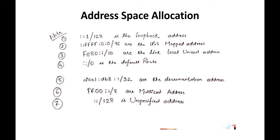The second special address is ::ffff:0:0/96, the IPv4-mapped address. We use mapping for IPv4 address translation or resolution. There are six sections of zero (from the double colon), then the 7th section with four zeros, then FFFF, then two more sections. In the eight-section IPv6 structure, we use this mapped address.